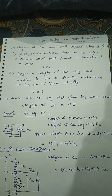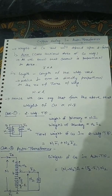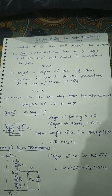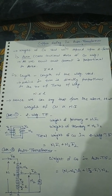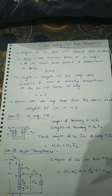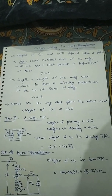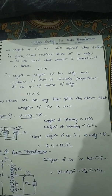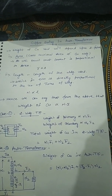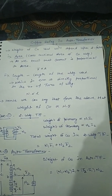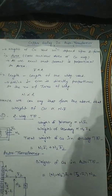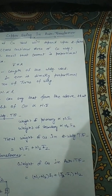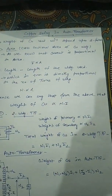To approach the weight of copper savings, we need to consider the factors which affect the weight of copper. The weight of something is affected by its cross-sectional area. Since current is proportional to area, area is directly proportional to current, so weight is directly proportional to current.